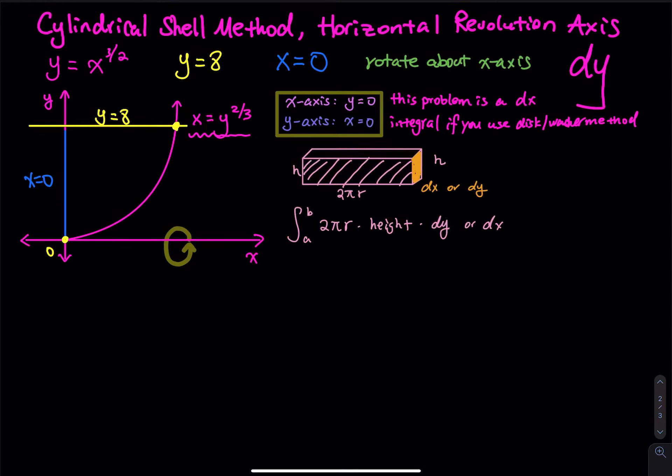This is a cylindrical shell method problem. The revolution axis is on the x-axis. If you look at the graph, there is a spinning symbol on the x-axis. So for horizontal revolution axis, the integral is a dy integral.